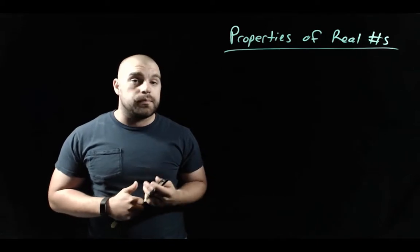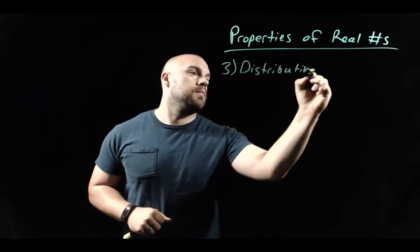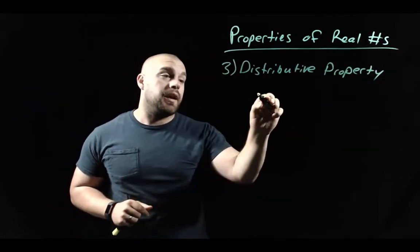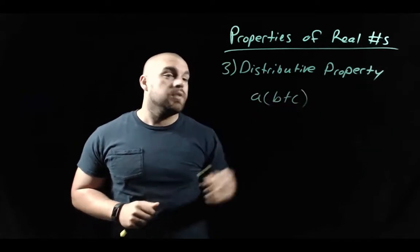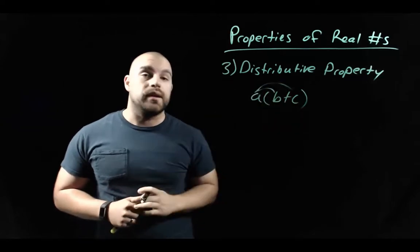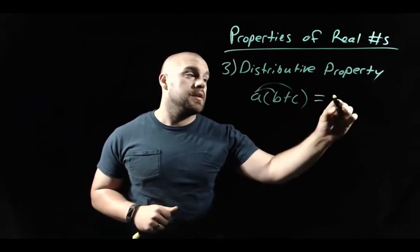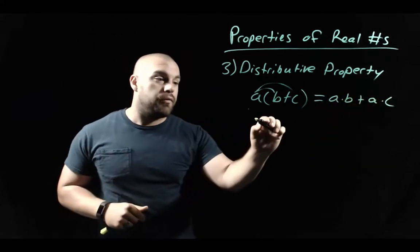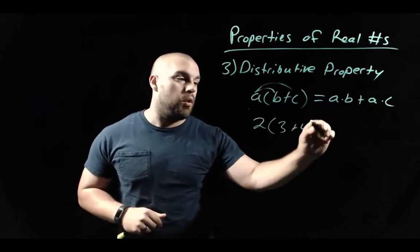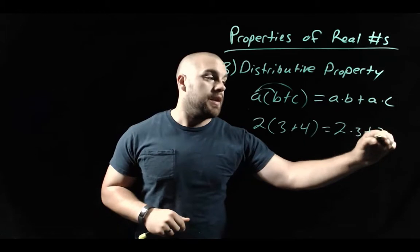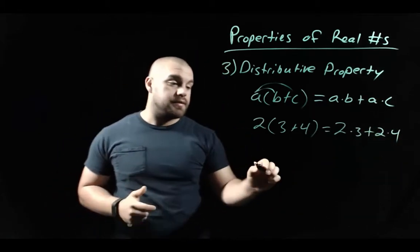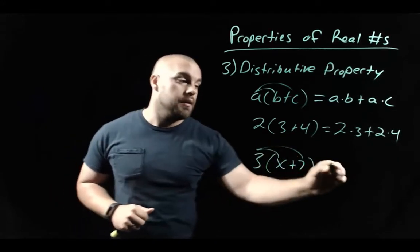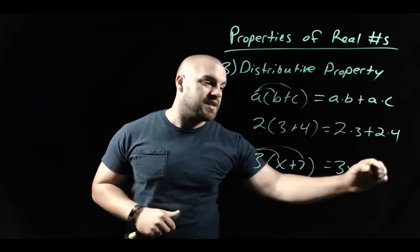Property number three is the distributive property, which relates multiplication and addition. If we take a times (b plus c), we distribute the a to each term inside the parentheses, ending up with a times b plus a times c. So for example, 2 times (3 plus 4) equals 2 times 3 plus 2 times 4. Or algebraically, 3 times (x plus 7) distributes to give 3x plus 21.